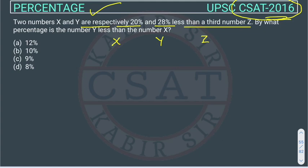X is 20% less than Z, and Y is 28% less than Z. Z has some number, so let's assume Z equals 100.